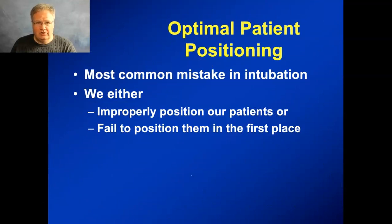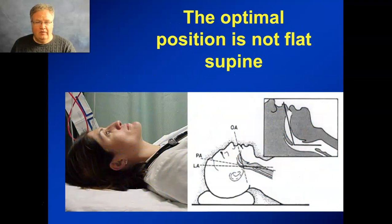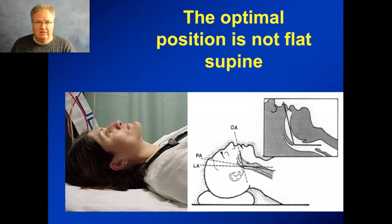For the rest of this I'm going to focus on optimal patient positioning, because the most common mistake we make in intubating patients is either failing to position them correctly in the first place, failing to position them at all and just trying to intubate them where they lay, or putting them into the wrong position. Patients laying flat supine is not optimal — we want to align the three axes of the airway: the oropharynx, the hypopharynx, and the larynx. Flat supine creates almost a 90-degree turn, which is not optimal.